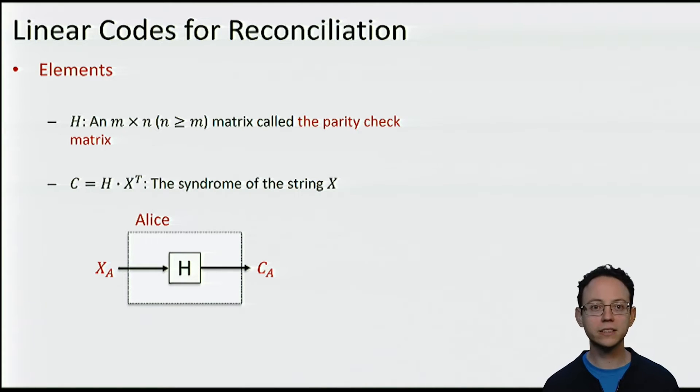The second element is the syndrome of a string. Given a string x, the syndrome of x is the string that results from multiplying the parity check matrix H with the transpose of x.